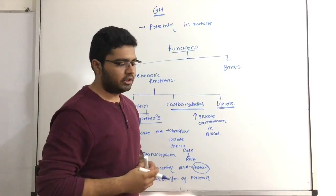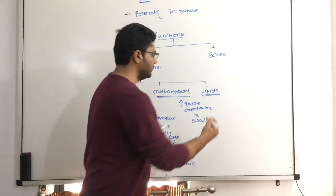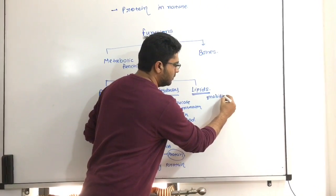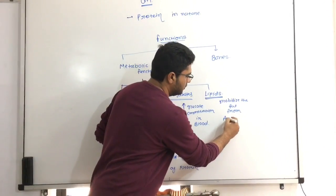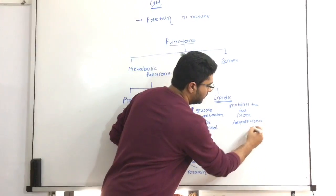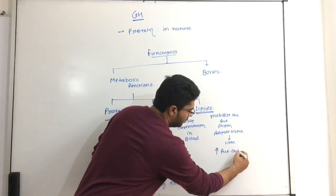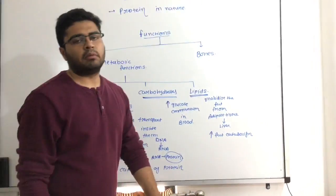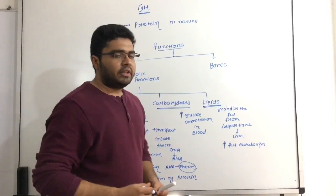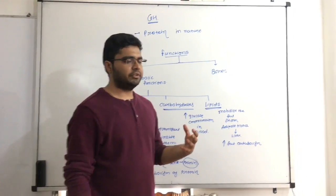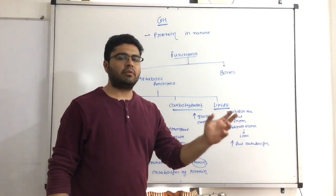Onto lipid metabolism: growth hormone metabolizes fat and mobilizes fat from the adipose tissue to the liver. Fat is a rich source of energy, so growth hormone increases the utilization of fat as a source of energy. In summary, growth hormone increases protein synthesis, increases glucose concentration in the blood, and mobilizes fat from adipose tissue.